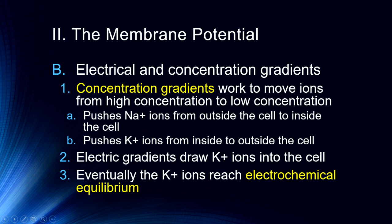Because ions repel one another, they try to equally distribute themselves. There is more sodium outside than inside, so the concentration gradient is trying to push sodium ions into the cell. At the same time, that concentration gradient is trying to push potassium ions from inside to outside the cell. Sodium ions don't leak in and out of the cell, but potassium ions do, and they get pushed in and out by concentration and electrical gradients. We maintain those levels via the sodium-potassium pump.